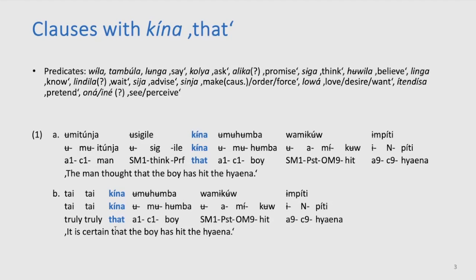We can look at the first example: 'ummitunja usigile kinna omohumbawamikumpiti', which means 'the man thought that the boy has hit the hyena'. We find this complement clause with a lot of verbs, for example utterance predicates or propositional attitude predicates, and a lot more. All the sentences were uttered by our consultant with the word order subject-verb-object in the main clause and also in the embedded clause.